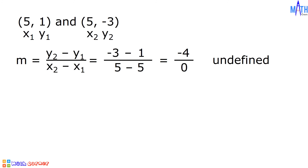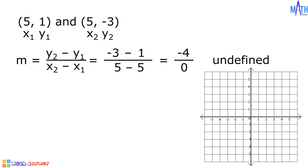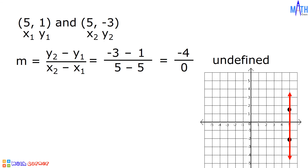Let us plot these two points and check the line. For (5, 1), from 0, we will move 5 units to the right and 1 unit upward. For (5, -3), we will move 5 units to the right and 3 units downward. The line passing through the points (5, 1) and (5, -3) is a vertical line. It means that the slope of a vertical line is undefined.